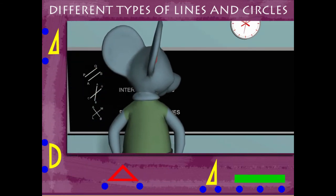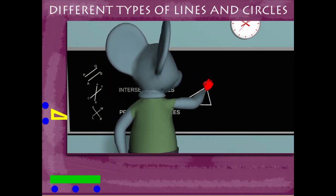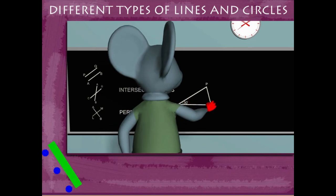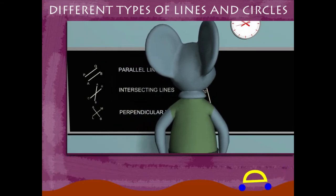Toby now uses three lines to make triangles. The first triangle is called a scalene triangle with all three sides and angles unequal.